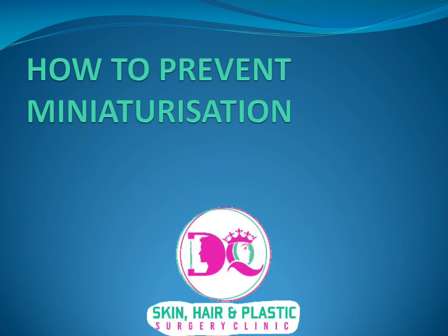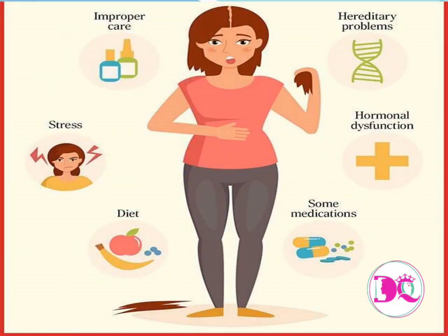Our initial treatment mainly aims at preventing miniaturization. To prevent miniaturization and stimulate hair growth, a lot of modalities are available. What I have shown here are a few of the important ones we should try to adopt to stimulate hair growth. One is improper care — some persons rub their hair excessively or apply unauthorized chemicals to the scalp which damage the hair follicles, and that should be avoided.